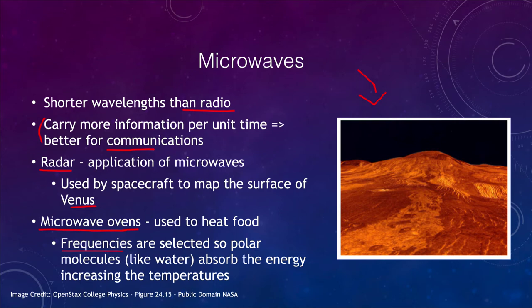In a microwave oven, it helps to have the food spin and turn so that all parts of it are exposed to the microwave radiation, ensuring even heating throughout. Those specific frequencies cause the molecules to absorb energy, and as things absorb energy, that increases the temperature.